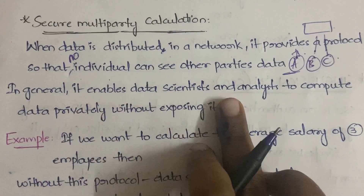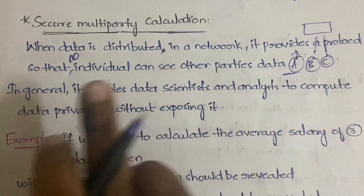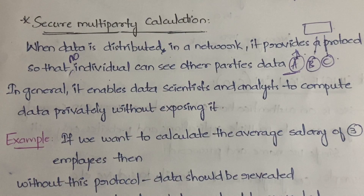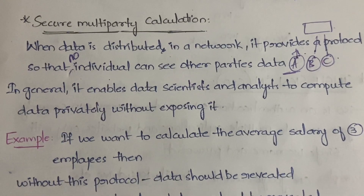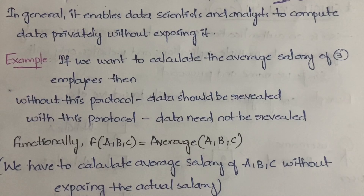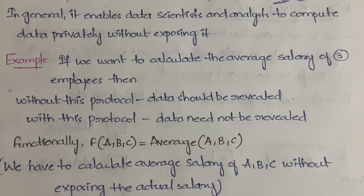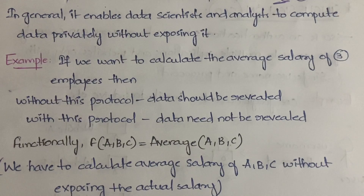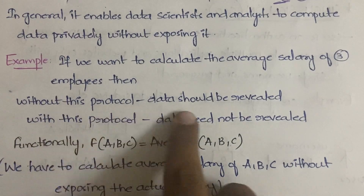In general, it enables data scientists and analysts to compute on data privately without exposing it — performing calculations without actually knowing the underlying values, in order to protect data security. For example, suppose there are three employees A, B, and C who want to calculate their average salary. But according to office policy, they are not supposed to disclose their individual salaries to each other. So how can they calculate the average? That's what we're going to learn.